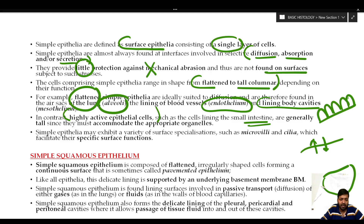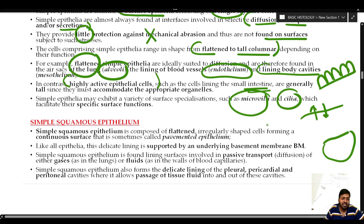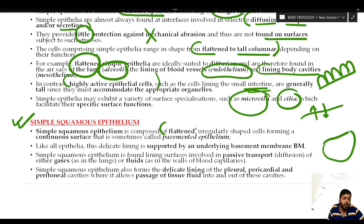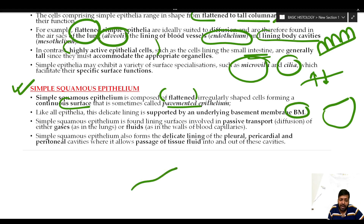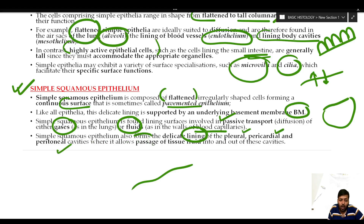Depending on activity, simple epithelia may be flat as simple squamous, or cuboidal, or columnar. Sometimes they will be specialized and may contain cilia or microvilli depending on the function they perform. Simple squamous epithelium is composed of flattened groups of cells forming a continuous surface layer — a pavement epithelium. Because it is thin, it is well suited for passive transport or diffusion of gases in the lung or fluids in the endothelial lining or body cavity.